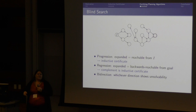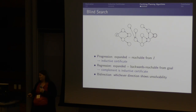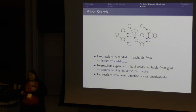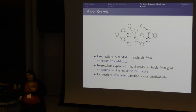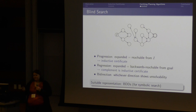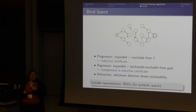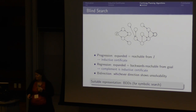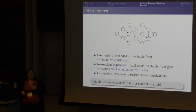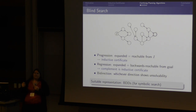For bidirectional search, since it is basically an iteration of progression and regression phases, either a progression phase or a regression phase shows unsolvability, and we can just use the appropriate technique. For symbolic search, BDDs are very suitable because they are already used for symbolic search. For explicit state forward search, we could also use BDDs. For regression with partial states, BDDs wouldn't be suitable anymore.